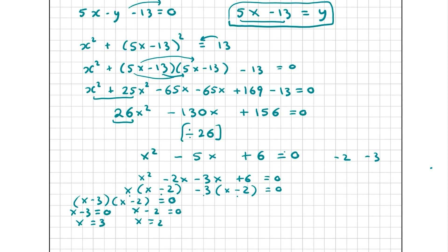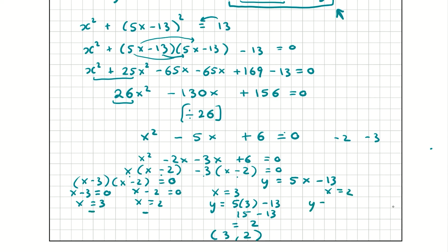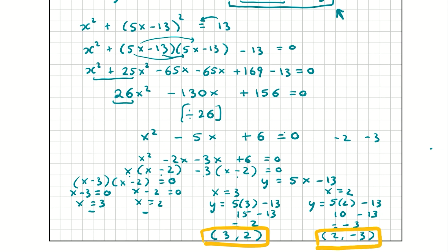Now let's use these to find our values for y. We have y = 5x - 13. When x = 3: y = 5(3) - 13 = 15 - 13 = 2, so one point of intersection is (3, 2). When x = 2: y = 5(2) - 13 = 10 - 13 = -3, so another point of intersection is (2, -3). These are our two points of intersection: (3, 2) and (2, -3), and for getting these correct you get a total of 15 marks for this question.